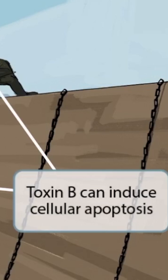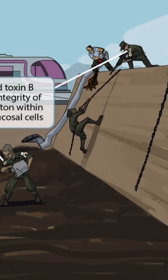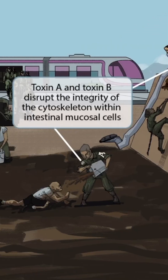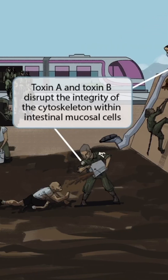So the drill sergeant with a B on his shirt killing a recruit represents that toxin B can induce cellular apoptosis. In reality, both toxin A and toxin B can cause intestinal fluid secretion and apoptosis, but toxin A is more enterotoxic and toxin B is more cytotoxic.